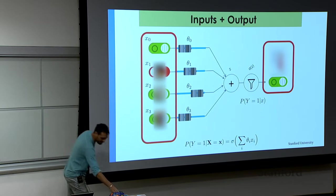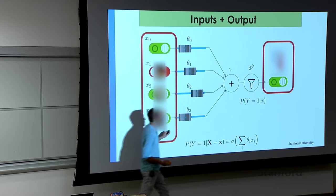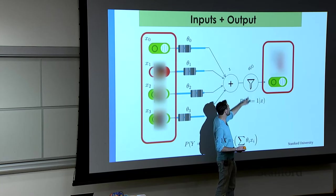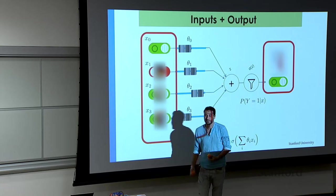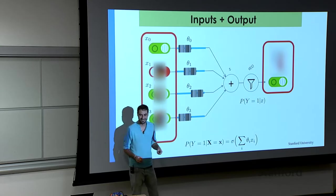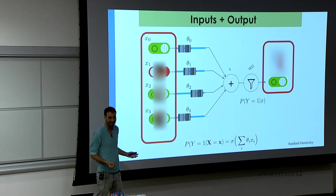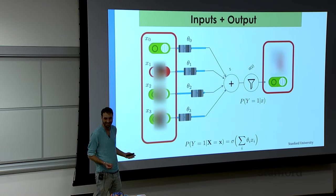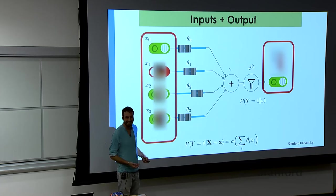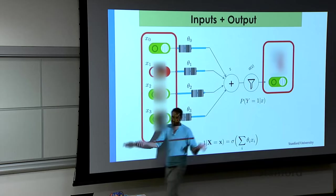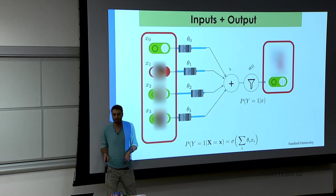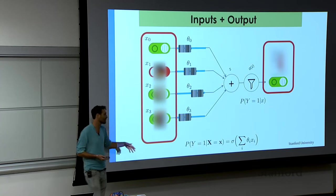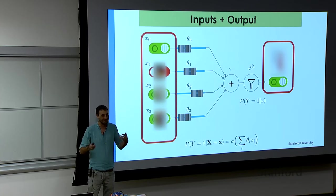Question: does it return one if the squashing function returns a value more than 0.5? Yes — the squashing function gives you a number between 0 and 1. If it gives you 0.8, we assume that's the probability that y equals 1. If the probability that y equals 1 is greater than 0.5, we predict a 1. Another question: the sigmoid function seems kind of like an arbitrary choice. If you want to get a number between 0 and 1, couldn't you use something else? Yes — people have used different squashing functions. Neural networks will use different squashing functions other than sigmoid. So you're right, it was a bit arbitrary, but it works very well.